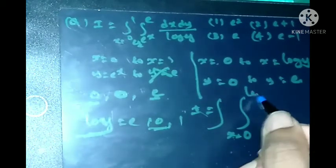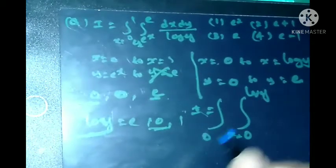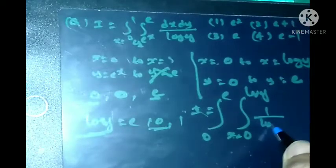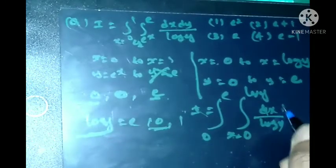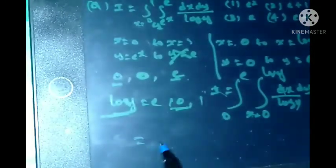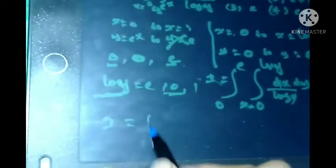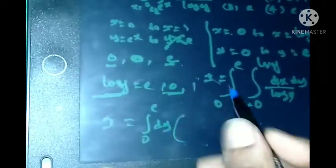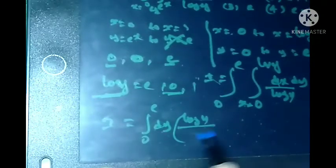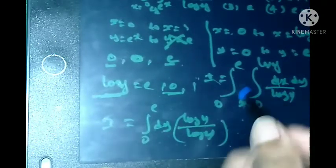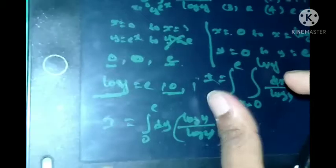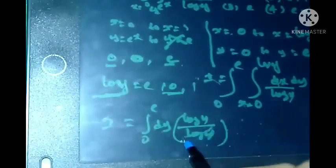Here x is equal to 0 to log y and y is equal to 0 to e. We get integral 0 to e, 1/log y dx dy. After integration with respect to x, we get integral 0 to e, x/log y, which evaluates to log y/log y.